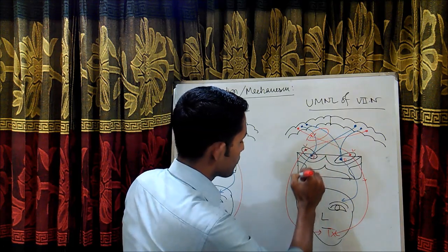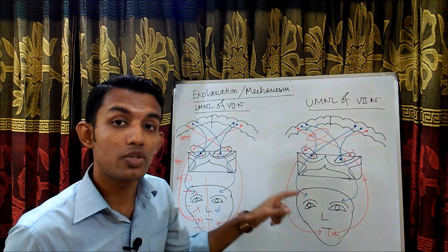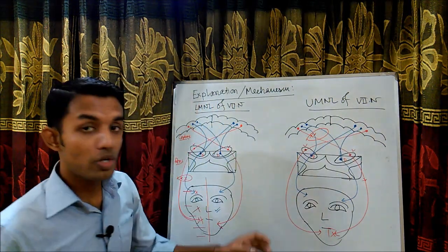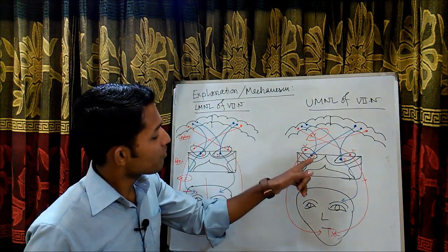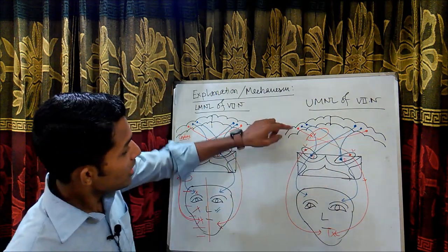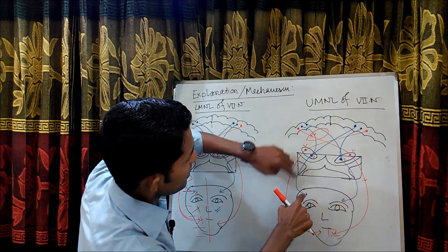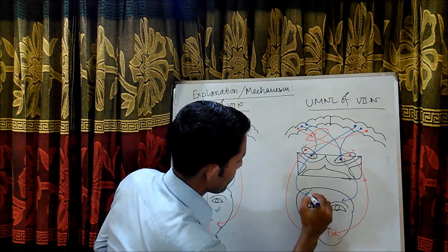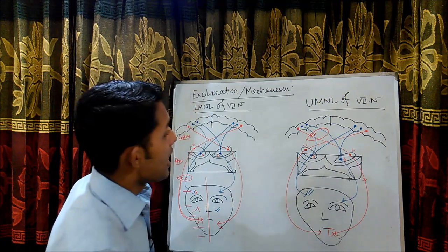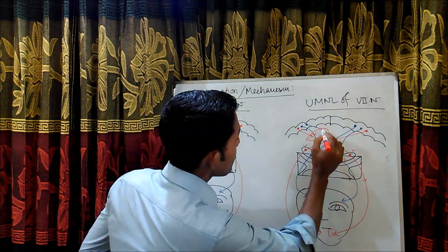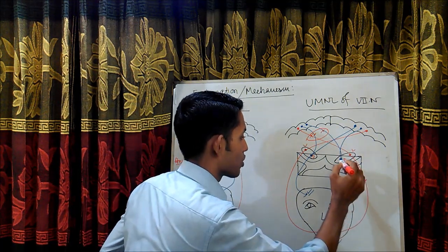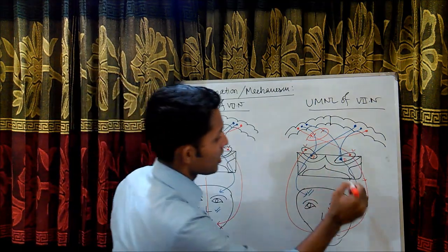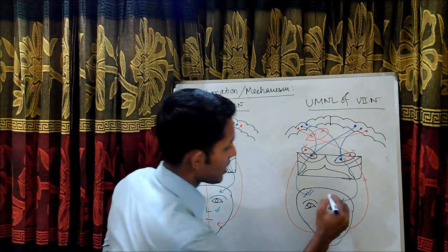However, the fiber going to the dorsal region is not actually damaged, because that fiber is also getting input from the other side of the cortex. As I mentioned before, the dorsal region of this nucleus gets input from both sides of the cortex. So even if this fiber from one side is damaged, the dorsal region still receives input from the opposite side, meaning the dorsal-region fibers and the muscles of the upper part of the face remain intact.